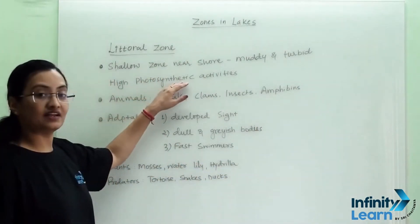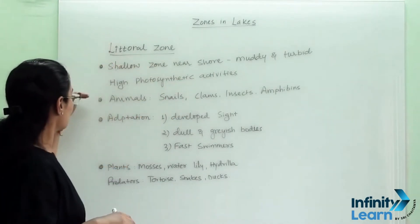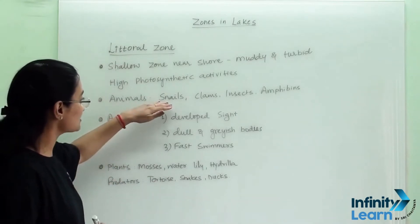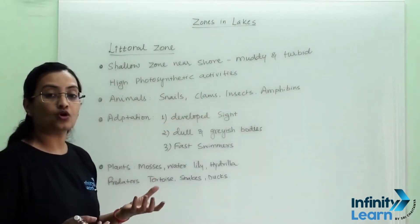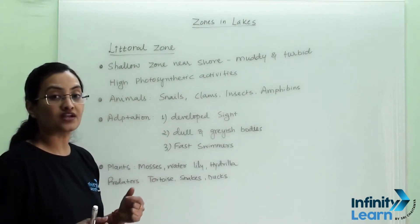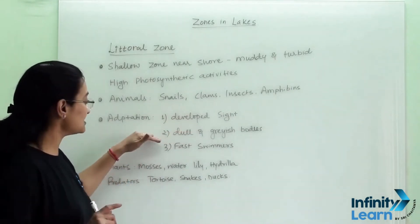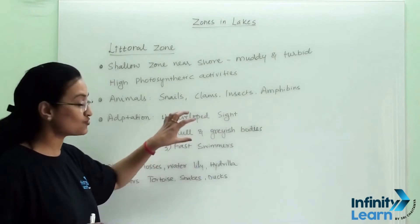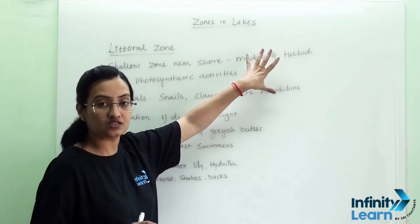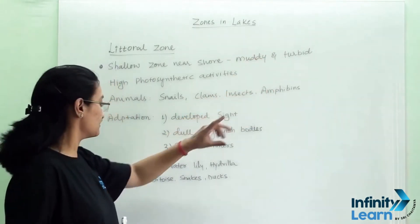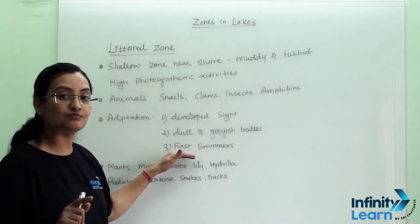We can see high photosynthetic activities because it is the uppermost zone of the lake. The animals residing here are snails, clams, insects, and some amphibians. Their adaptations — the changes they have developed to survive in this zone — are: they have developed eyesight; they have a dull and grayish body so they blend with the muddy turbid water and can hide from predators; and they are fast swimmers, which also helps them escape predators.